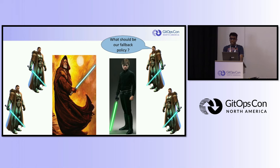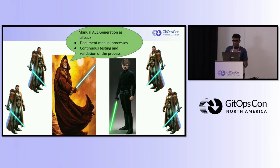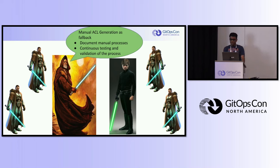How do you handle cases where Git-related systems are unavailable and you need to deploy an ACL? Unfortunately, a manual process is the way to go. However, you should document that manual process for generating ACLs, including the necessary steps, commands, and tools required. You should also regularly test and validate the manual ACL generation process to ensure its effectiveness and reliability.